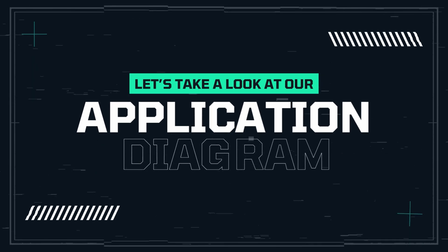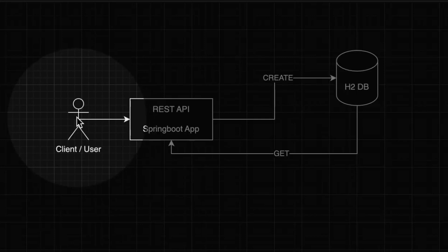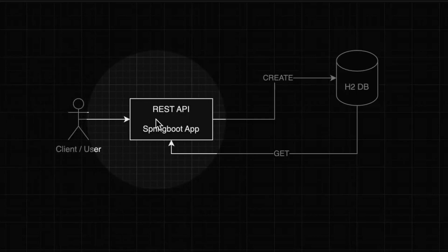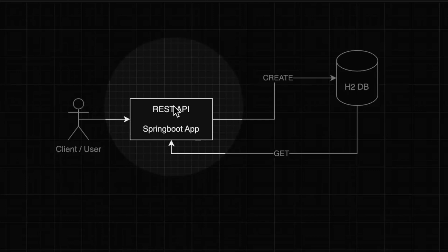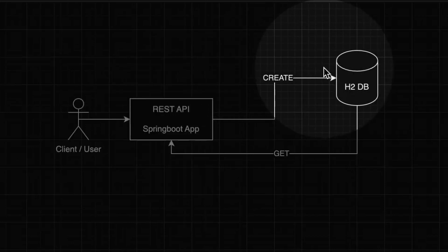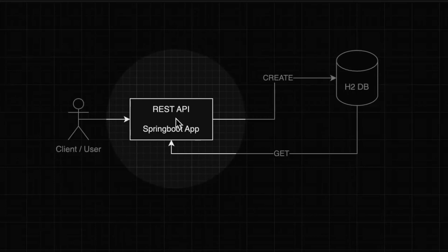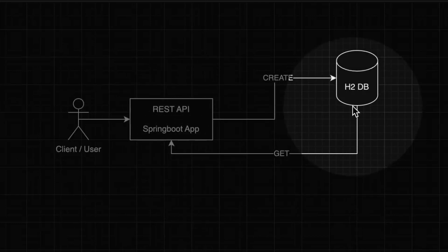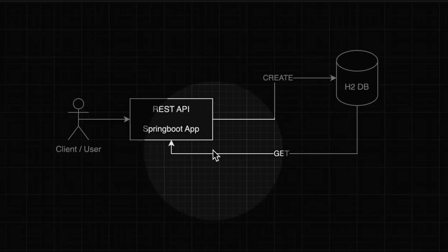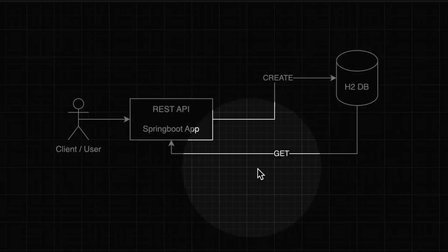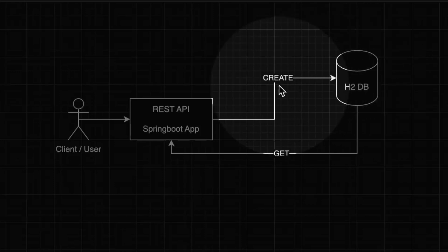Before starting to write any code, let's have a look at how our program is going to look. We will have a client — we can even call it a user — that will be sending a request to our Spring Boot application. This application will have two methods: a POST method to create a user, and a GET method to retrieve all saved users. When a POST request is received, it will be processed by the Spring Boot app and sent as a create request to H2 DB. When we do a GET all request, the DB will return a list of all the users.